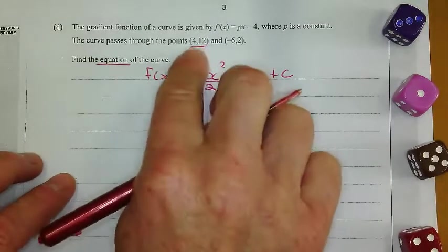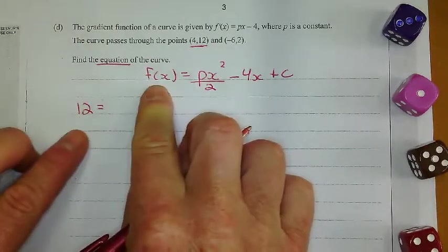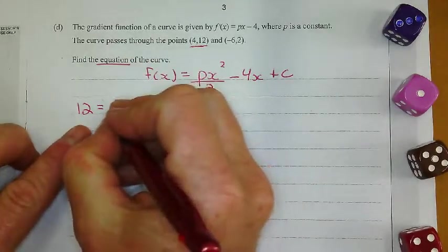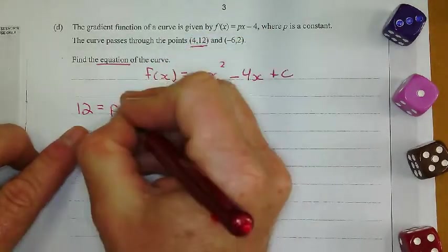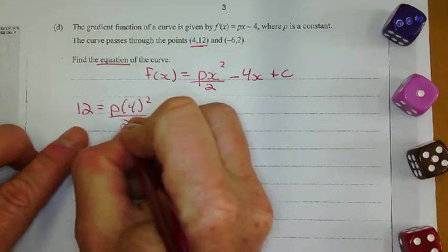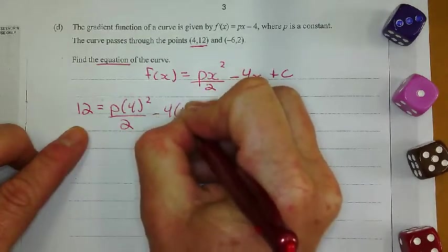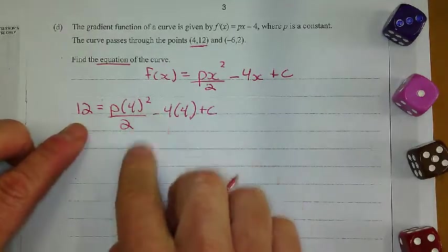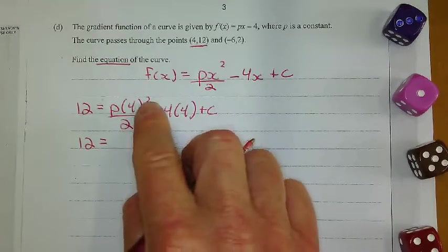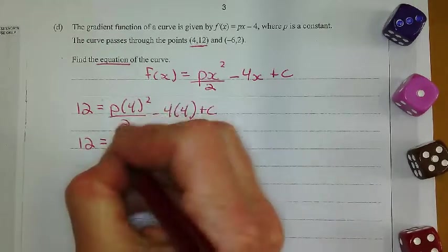So with this point, what I'm saying is that 12 is going to substitute for f of x, because that's what it is, equals p times 4 squared over 2. And I just plug and chug 4 in there and I just see what happens, minus 4 times 4 plus c. All right, so now I just simplify this. I get 8p here, because 4 squared is 16, and 16 divided by 2 is 8,